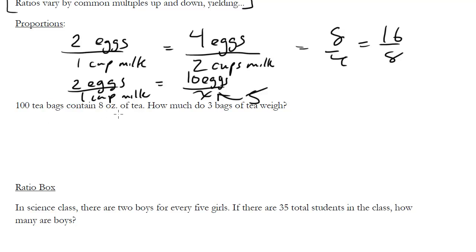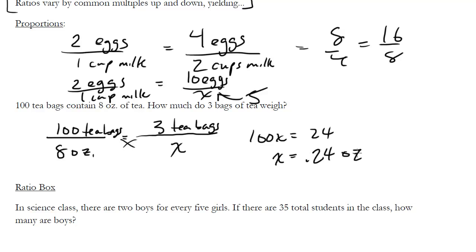Let's look at an example. A hundred tea bags contain eight ounces of tea. How much do three bags weigh? When we set up a proportion, we have to make sure our tops and bottoms are of the same kind, same unit. Let's write 100 tea bags over 8 ounces equals 3 bags over x. Here's our proportion. Cross multiply: 100x = 24, divide both sides by 100, we get x = 0.24 ounces. That would be our answer. Nothing but ratios mixed together.